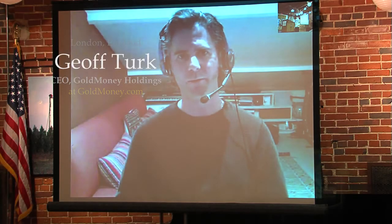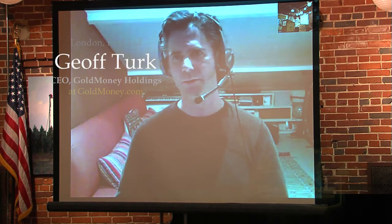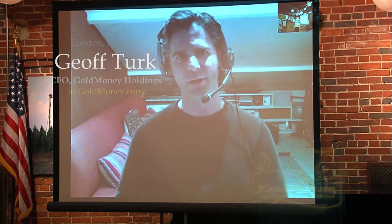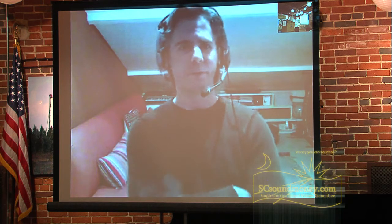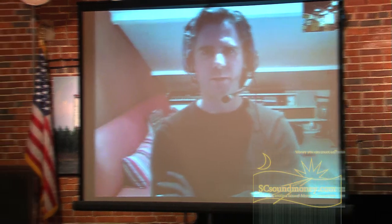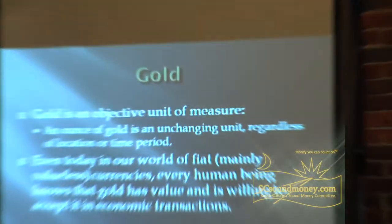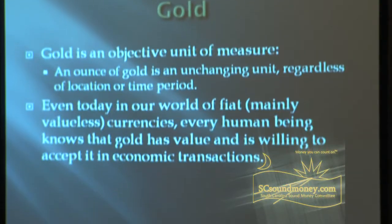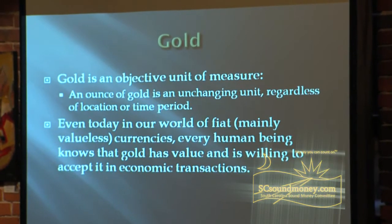Where it's quite popularly used for adornment, but underlying that is a monetary function — it's a store of value. Going on to slide six, we touched upon it earlier about it being fungible and interchangeable. But gold is an objective unit of measure. An ounce of gold is an unchanging unit, regardless of the location where it's held or the time period that it was first created in.